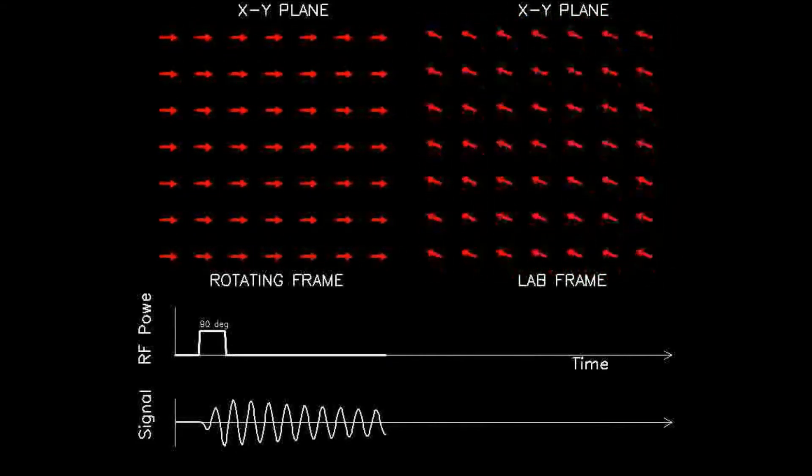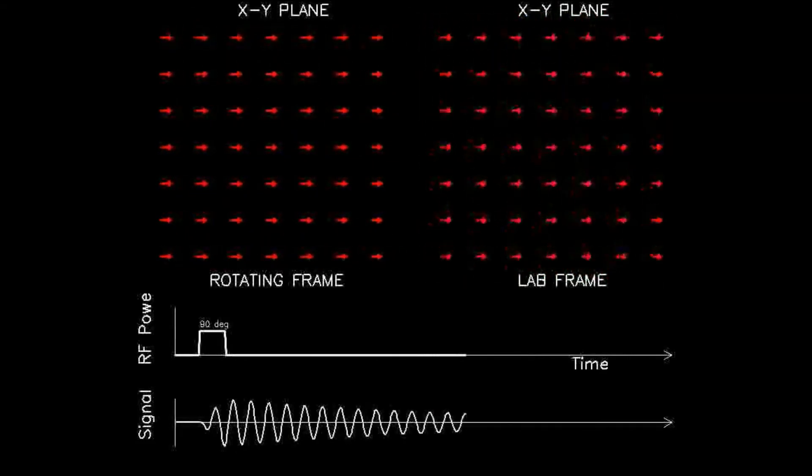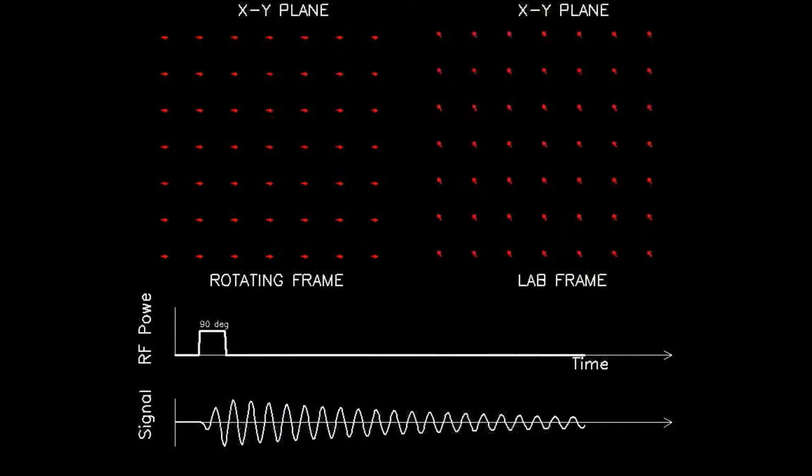Note that while the dipoles realign, the magnitude of the transverse component, that is the length of the red vector, shortens.